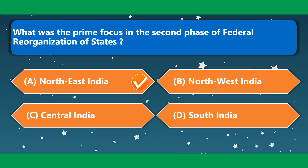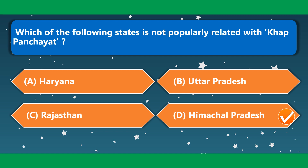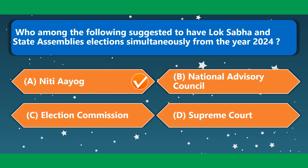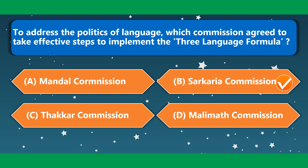What was the prime focus in the second phase of federal reorganization of states? Which of the following states is not popularly related with Kha-Panchayat? This is Himachal Pradesh. Who among the following suggested having Lok Sabha and state assembly elections simultaneously from 2024? NITI Aayog. Which commission agreed to take effective steps to implement the three-language formula? This was the Sarkaria Commission.